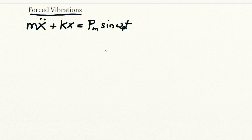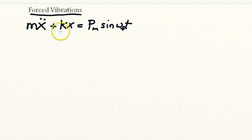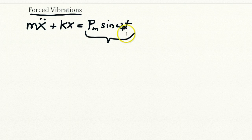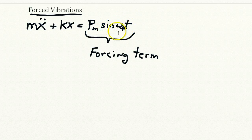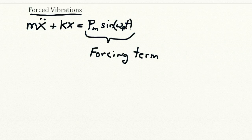The equation for forced vibrations looks like this. We've got the usual terms on the left: mass times acceleration — the second derivative of position with respect to time — plus spring constant k times position x. On the right-hand side we have what's called the forcing term: a general periodic function written as p sub m times sine of omega sub f times t, where omega sub f is the forcing frequency and p sub m is the amplitude, following the notation in the book.